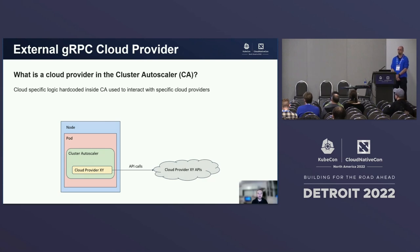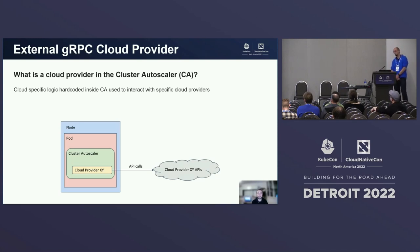The logic behind these scaling decisions is common for any environment, but at the end the CA needs to interact with the specific underlying infrastructure — like create a new host, remove a VM, give me the list of current instances, and so on. This is done by calling APIs for the specific cloud provider where the cluster is running.